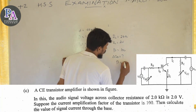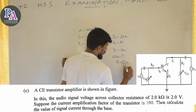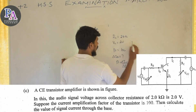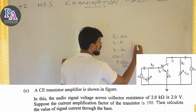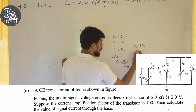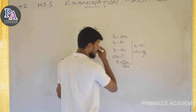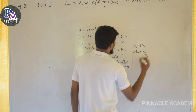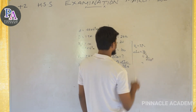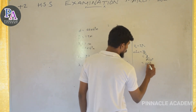Ib is equal to Ic divided by beta. The collector current Ic can be found using the RC value. RC is 2 kilohms, which is 2 into 10 raised to 3 ohms. Using the circuit values with 10 raised to minus 3.